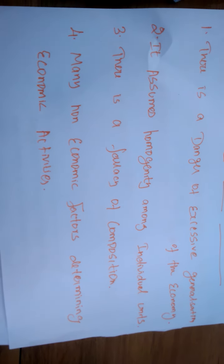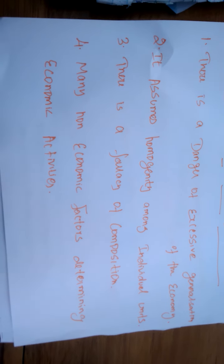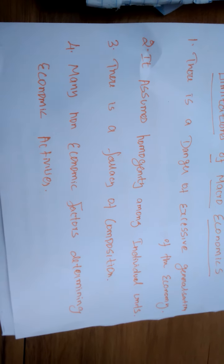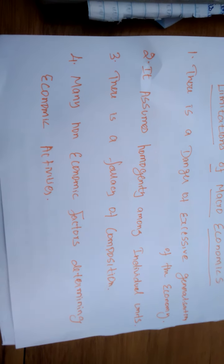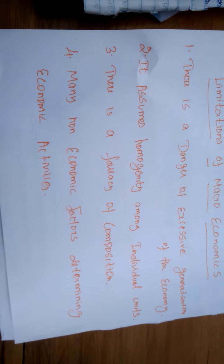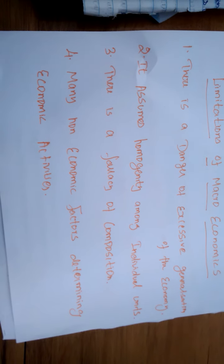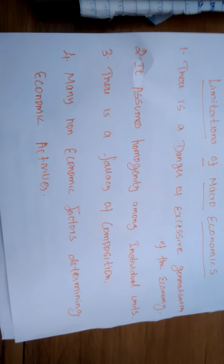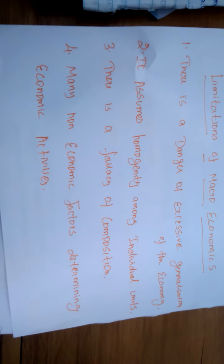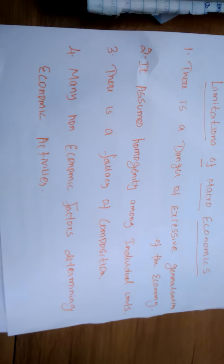The next limitation is the fallacy of composition. The fallacy of composition means some mistakes in composing the economic analysis. For example, some goods may be very good for individual people, but the same goods may not be suitable for the development of one nation's economy. Or some goods' production may improve one nation's national income but will not improve the economic development of another nation. This is called the fallacy of composition — all nations, all peoples, and all times will not be the same in improving economic development.